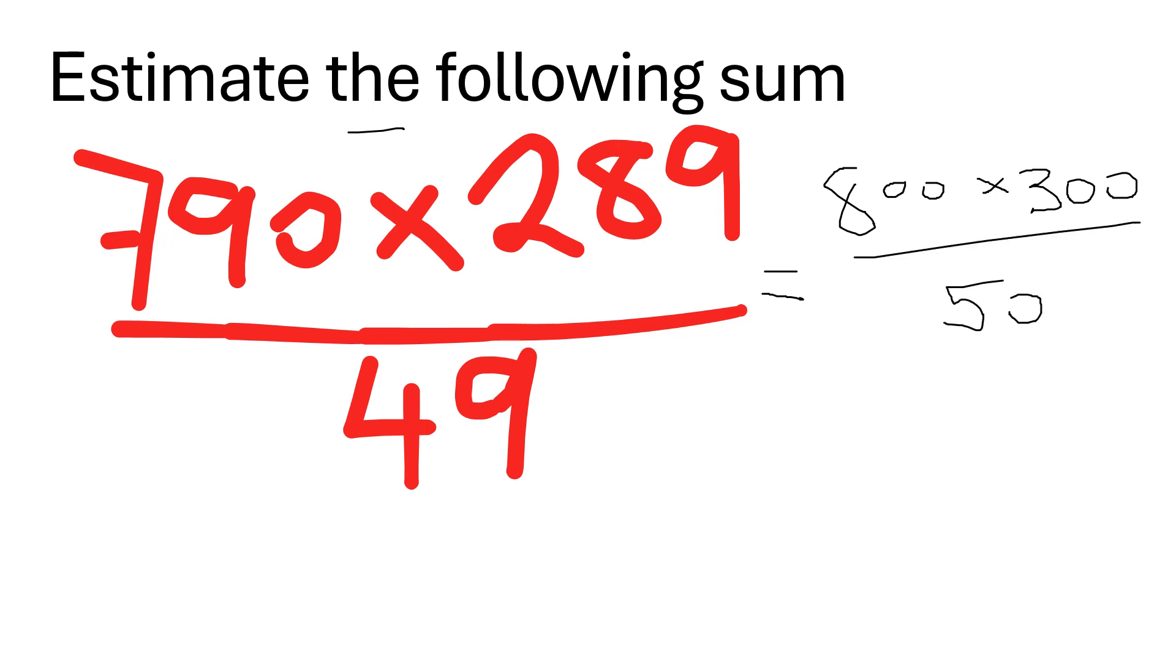So let's work it out bit by bit. So 8 times 3 would be 24 and then add on the four zeros. So you have 1, 2, 3, 4, so 240,000 over 50.